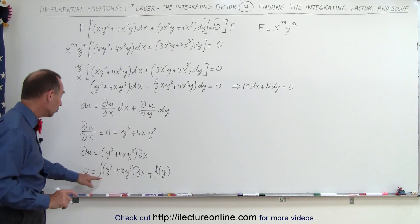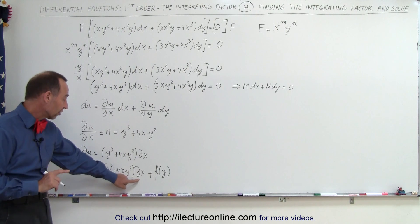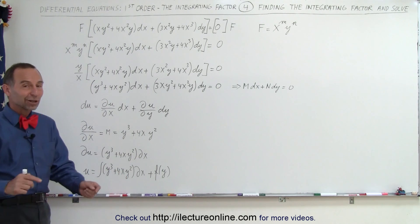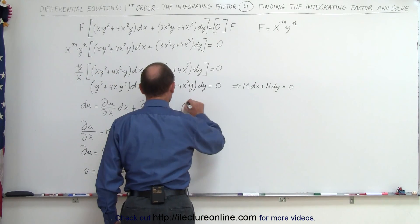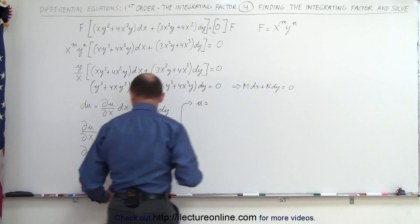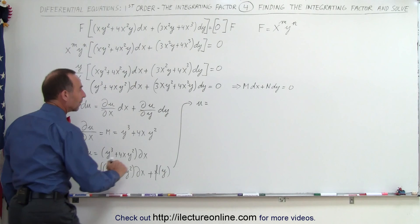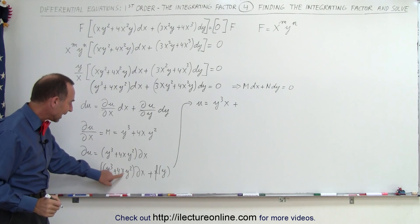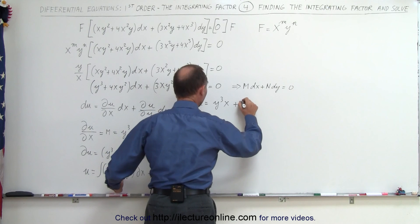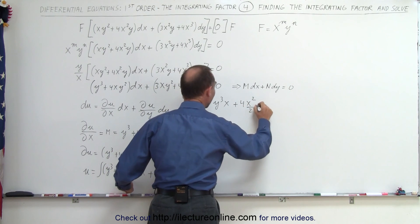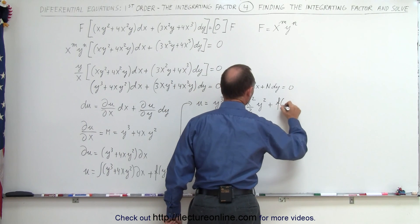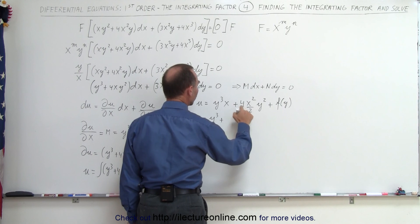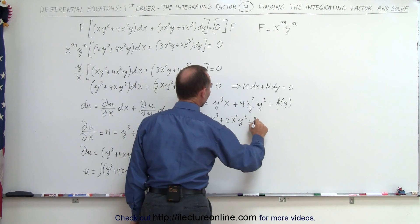The reason we have to include the function of y is because in this case, x is the variable and y is the constant when we integrate, which means we end up with a constant of integration that could be a function of y. Integrating, with y as a constant, we get u = xy³ + (4x²/2)y² + g(y), which simplifies to u = xy³ + 2x²y² + g(y).